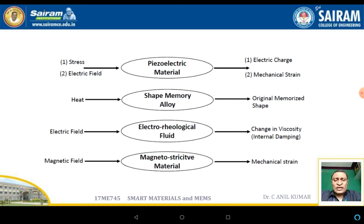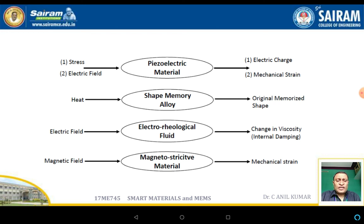For most metals, applying an electric field generates heat, which causes expansion and mechanical strain. In shape memory alloys, applying heat allows the material to recover its originally memorized shape. In electrorheological fluids, applying an electric field changes the viscosity or increases the damping. In magnetostrictive materials, applying a magnetic field develops mechanical strains. These inherent properties can be used for sensing, actuation, and designing smart materials and structures.